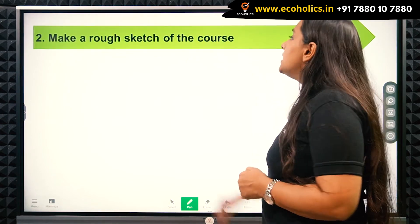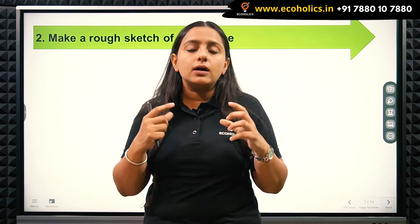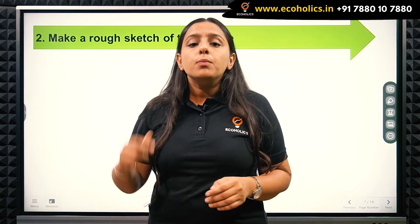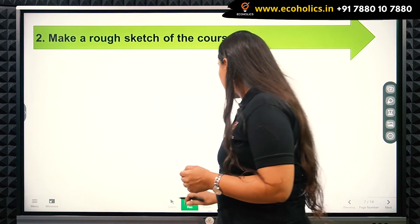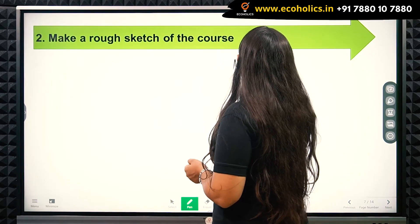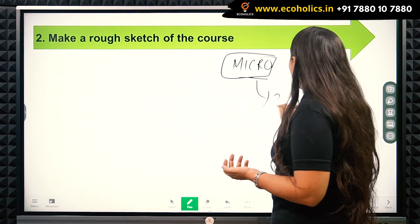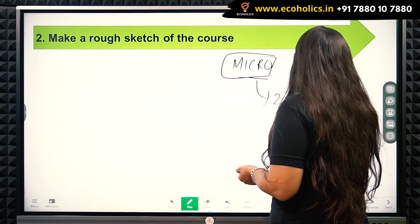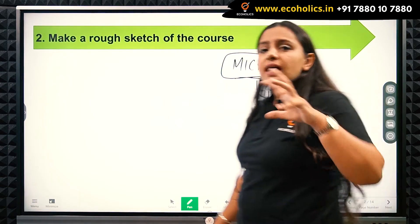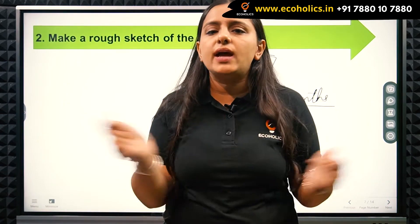The next step is to make a rough sketch of the course. Given limited time and effort, it's important to plan out the course. For example, if I have microeconomics, I might decide to cover it in two months — at least I have a target. Once I do this, I know how much time I have.